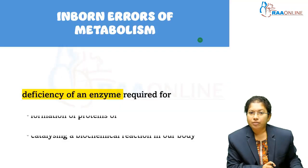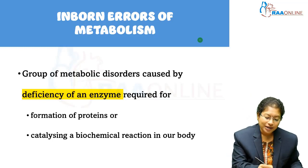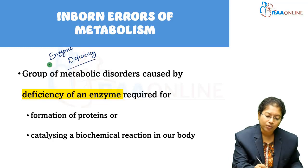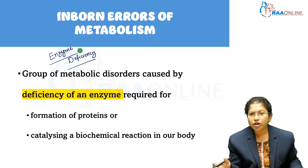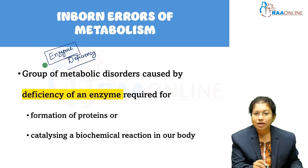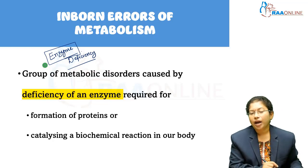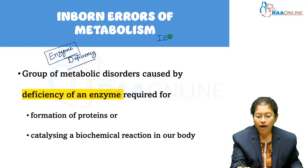IEM is a group of metabolic disorders mainly caused by enzyme deficiency. There are various metabolic processes taking place in our body — it may be carbohydrate metabolism, lipid, or protein metabolism. Every metabolism requires an enzyme, so enzyme is essential in all metabolism. If there is any defect in the enzyme — any mutation of the gene producing that enzyme — it leads to inborn errors of metabolism.